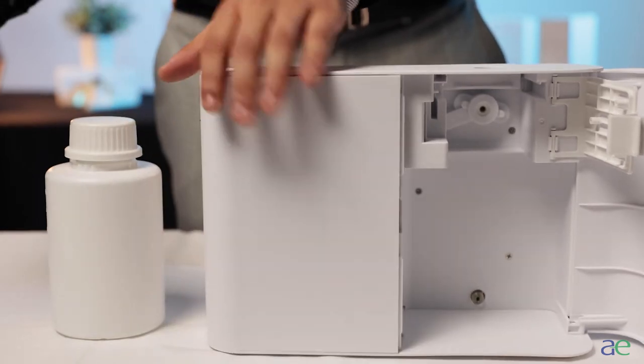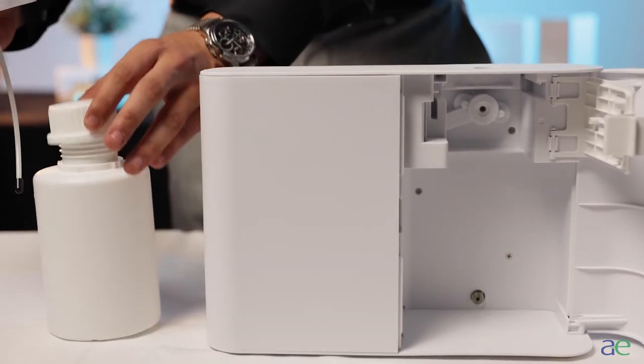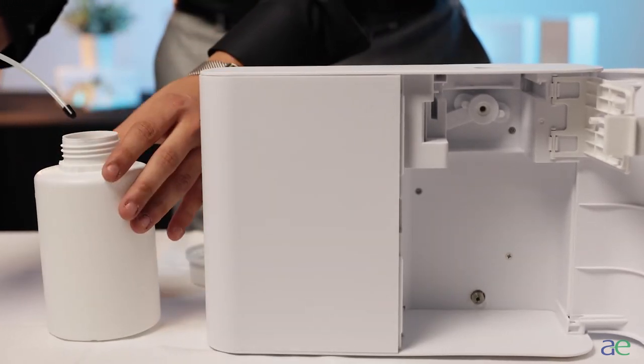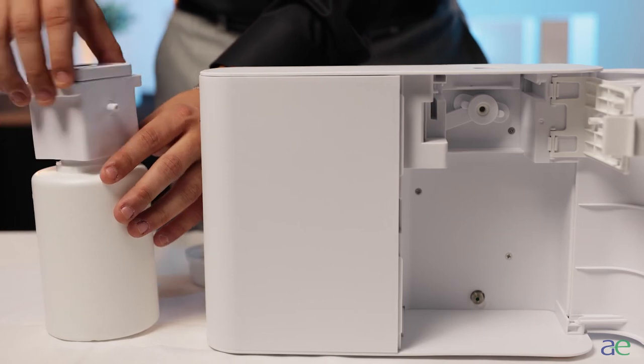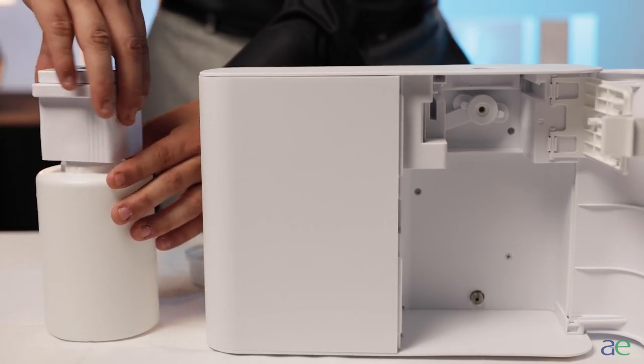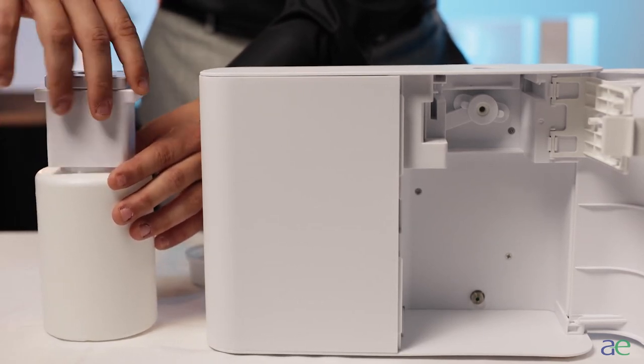Remove the cap from the bottle and completely remove the foil seal. Screw on the atomizer to the fragrance bottle firmly. Do not over or under tighten the bottle and make sure it's secure.